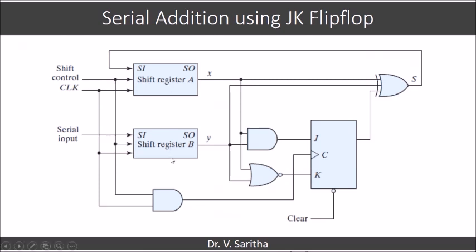This circuit diagram goes like this. Shift register A and B outputs will become X, Y. We have just now seen X XOR Y XOR Q is S. S is obtained using XOR gate.